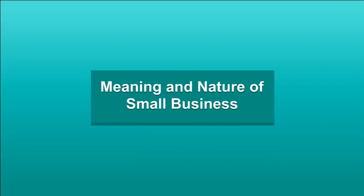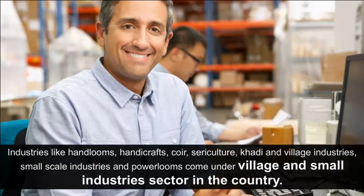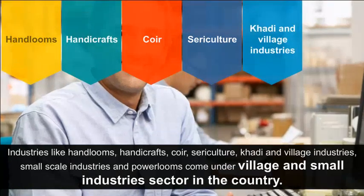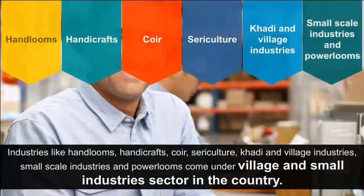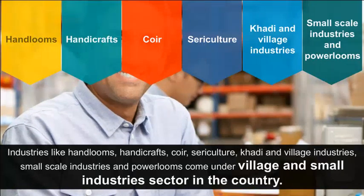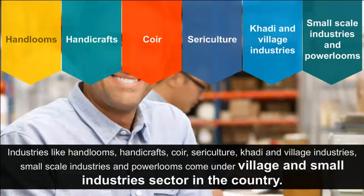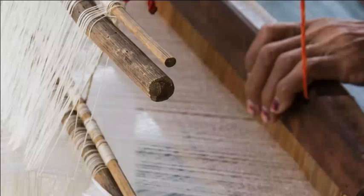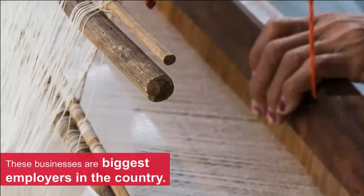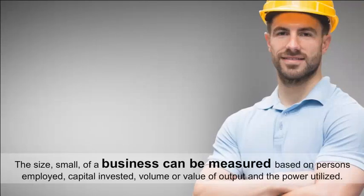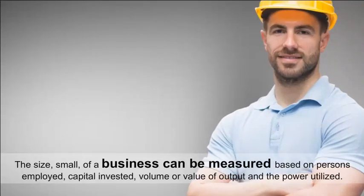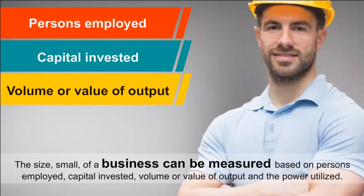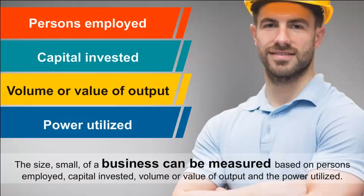Meaning and Nature of Small Business: Industries like handlooms, handicrafts, coir, sericulture, khadi and village industries, small-scale industries, and power looms come under the village and small industries sector in the country. The last two of these are modern small industries. These businesses are the biggest employers in the country. The size of a business can be measured based on persons employed, capital invested, volume or value of output, and the power utilized.